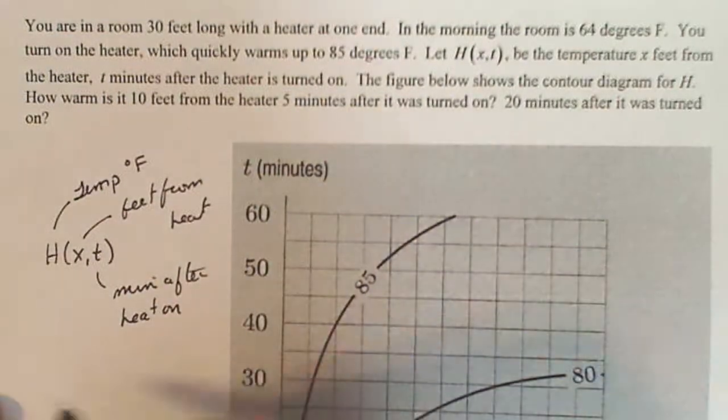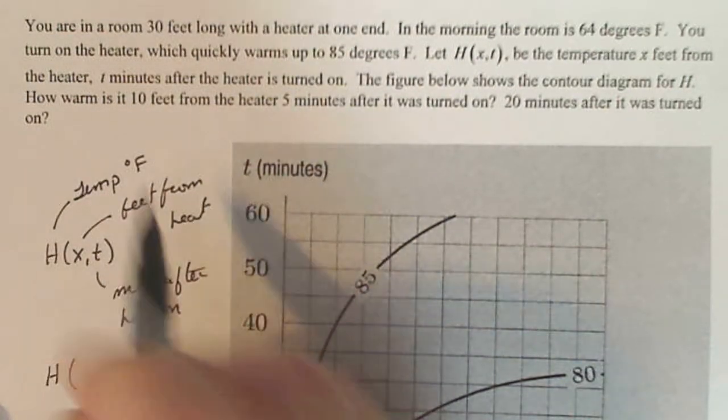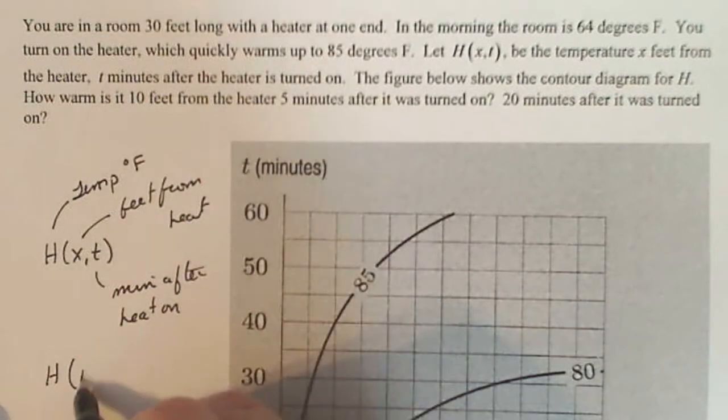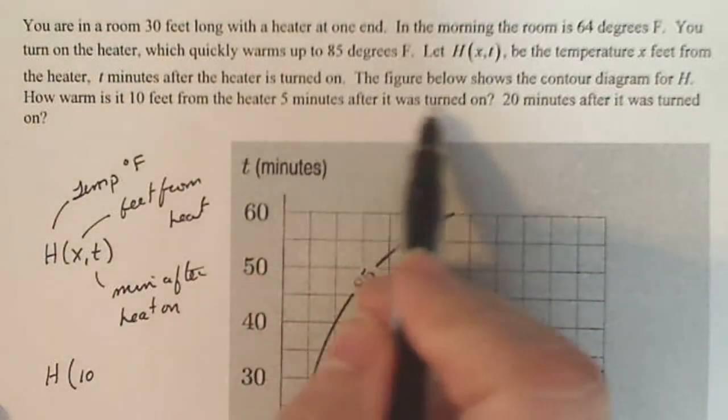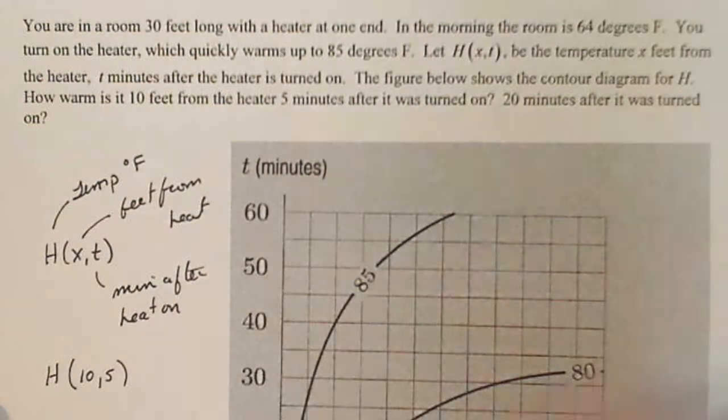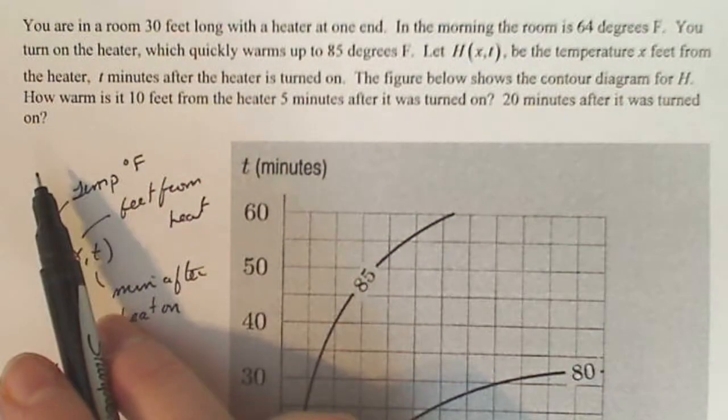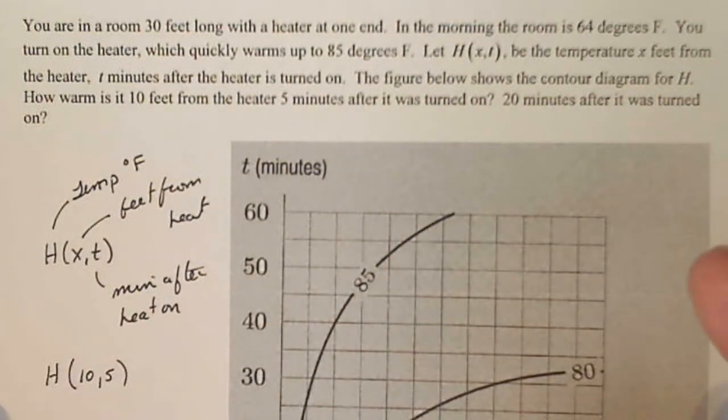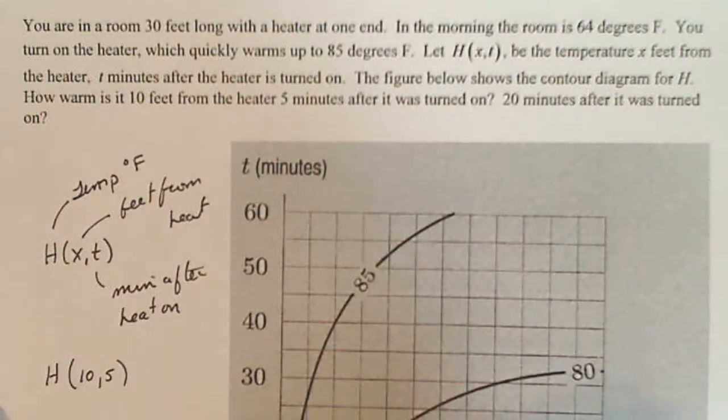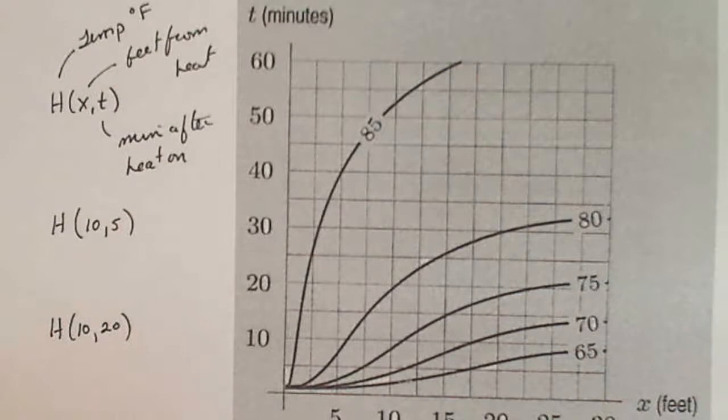So they're looking for H of 10 feet from the heater - so that's x, five minutes after it was turned on - so that's t. So that's the value we want from the chart. The second one says 20 minutes after it was turned on. Now it doesn't give you a feet, but I'm going to assume it's the same because they haven't stated otherwise. So we want H of 10,5 and H of 10,20.